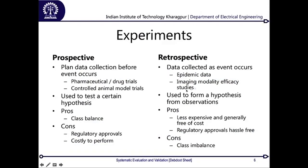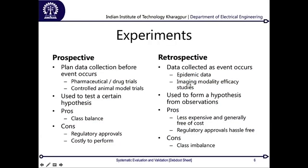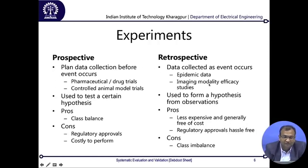The next type is a retrospective study, where data is collected as the event occurs. A common example is epidemic data - there is an epidemic breakout and health offices constantly record that data without planning when the epidemic occurs. In imaging, this can be modality efficacy studies, where whatever scans are being done on a machine are recorded over the long run, and people use this later to evaluate whether the study or the machine's performance was good.